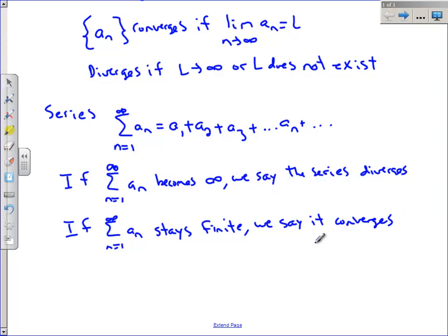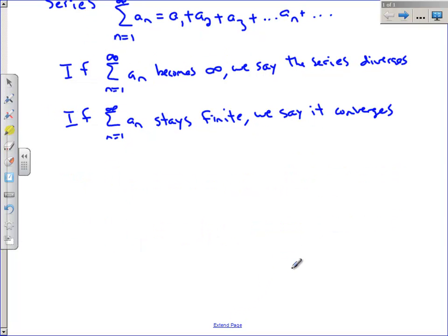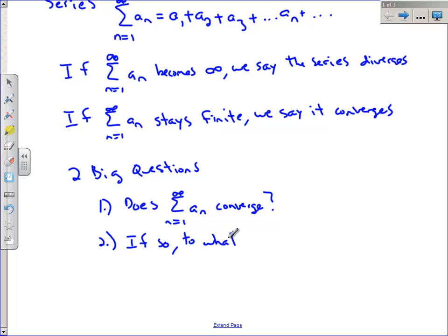Now the entire rest of this chapter is going to be devoted, dedicated, to answering two questions. Number one, does some series converge? That's going to be our first question. Does it converge or diverge? And the second question is, if so, to what value? Now today we're only going to talk about whether something diverges or converges. So let's go ahead and get started with that. Let's talk about some specific examples.